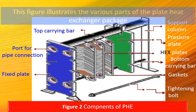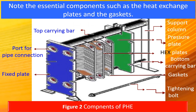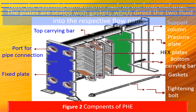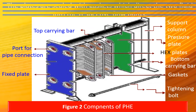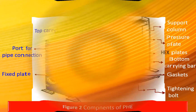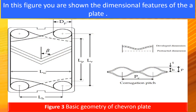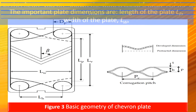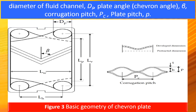This figure illustrates the various parts of the plate heat exchanger package. Note the essential components such as the heat exchanger plates and the gaskets — the plates are sealed with gaskets which direct the two fluids into their respective flow paths. The important plate dimensions are: length of the plate LP, width of the plate LW, diameter of the fluid channel DP, plate angle (chevron angle beta), corrugation pitch PC, and plate pitch p.